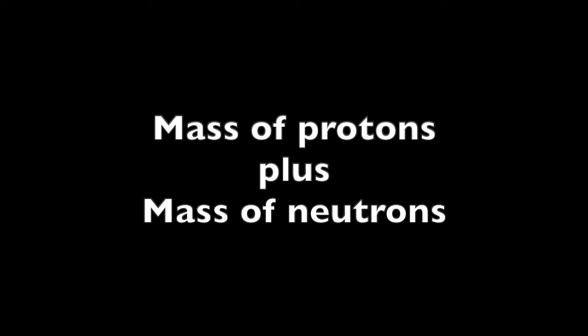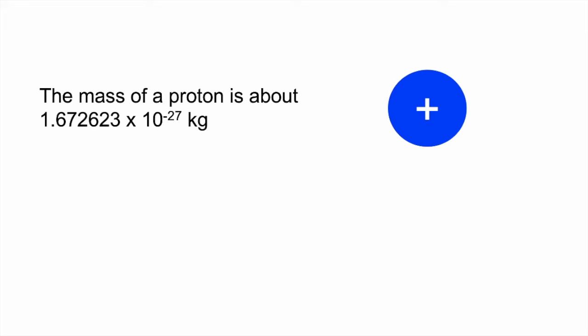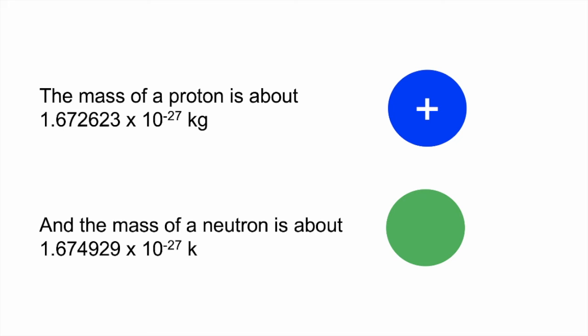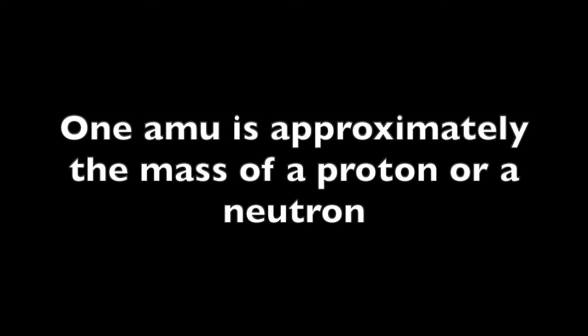How do we find the mass of an atom? The mass of an atom is approximately equal to the mass of protons in the atom plus the mass of the neutrons in the atom. The mass of a proton and a neutron have very awkward numbers because of the exponents. Fortunately, chemists use a different unit of measurement called the atomic mass unit. One atomic mass unit, or one AMU, is approximately the mass of a proton or a neutron.